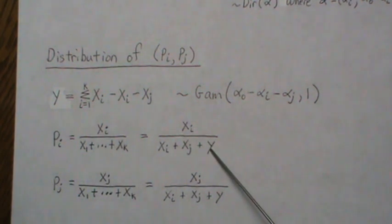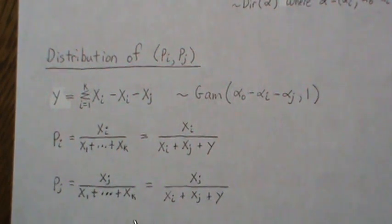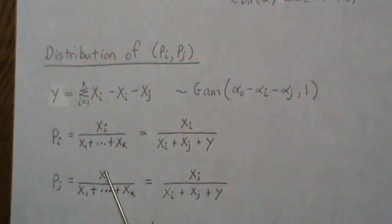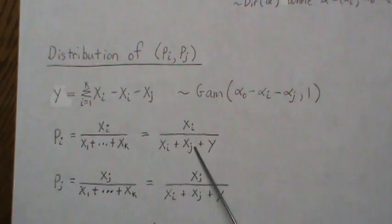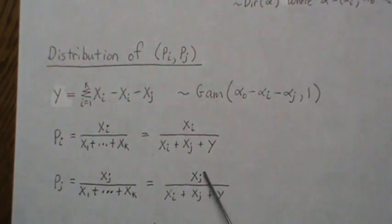And then for pj, we do the same thing, xj, and this is the sum of all of them. That's the way it's originally defined. So this is the xj, right? This is xi, and this is y. So again, there's three gamma distributions,